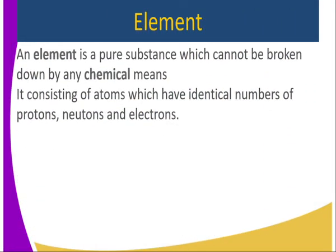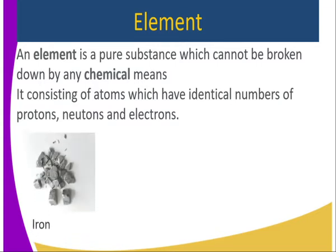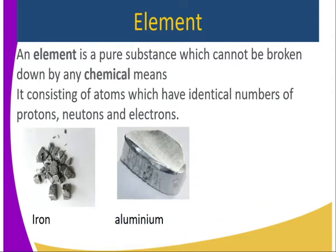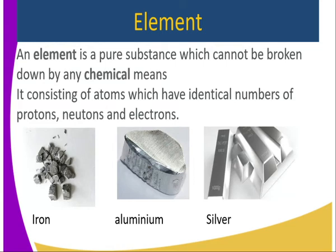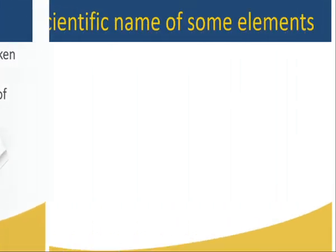An element is a pure substance which cannot be broken down by any chemical means. It consists of atoms which have identical numbers of protons and neutrons. Examples include iron, aluminium, and silver. Elements exist in all three states of matter: some are in solid state, some are in liquid state, and others are in gaseous state.